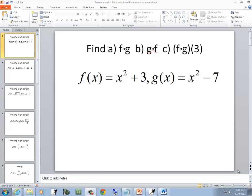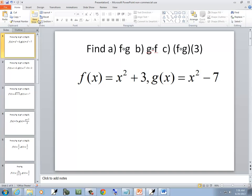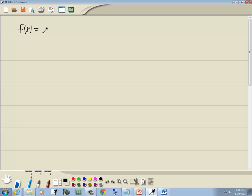Let's find these compositions. So we've got f of x is equal to x squared plus 3, and g of x is equal to x squared minus 7.